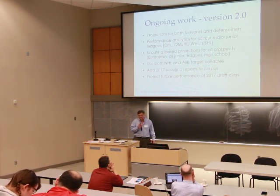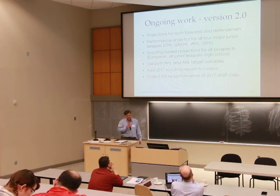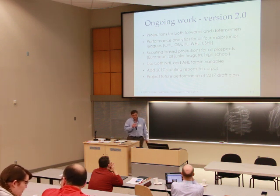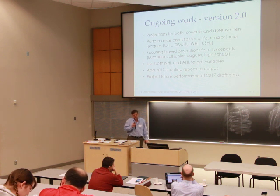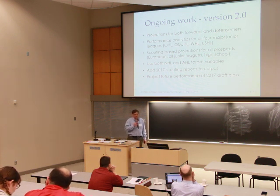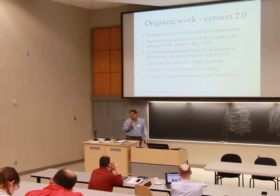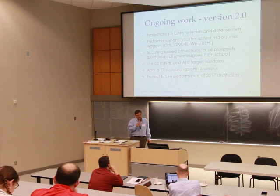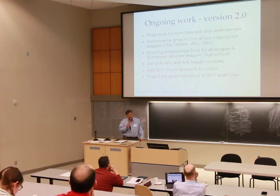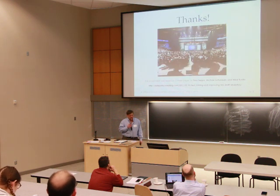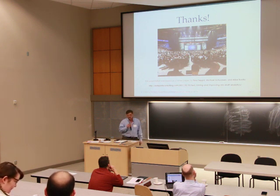Ongoing work is probably pretty obvious. We just did a sample study with CHL forwards, so we're expanding that to forwards and defensemen. We're adding in performance analytics for the four major junior leagues. And because we've got this scouting data, we can use that as a fallback to provide predictions for players from other leagues, especially high school — where the competition varies so much. We'll also look at both NHL and AHL target variables, add in the 2017 data, and make predictions on 2017 and going forward. Thank you to my white paper co-authors, Michael Shuckers and Mike Rubito. You can find the white paper on Michael's website.